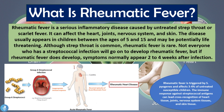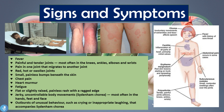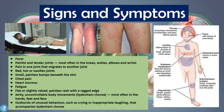Rheumatic fever occurs when the strep bacteria is left to flourish and the body's immune system begins to fight back. The antibodies produced against the group A streptococcal bacteria begin to fight the body itself, damaging tissues and organs instead of the bacteria, and severe complications may result affecting the heart, joints, nervous system, and skin.